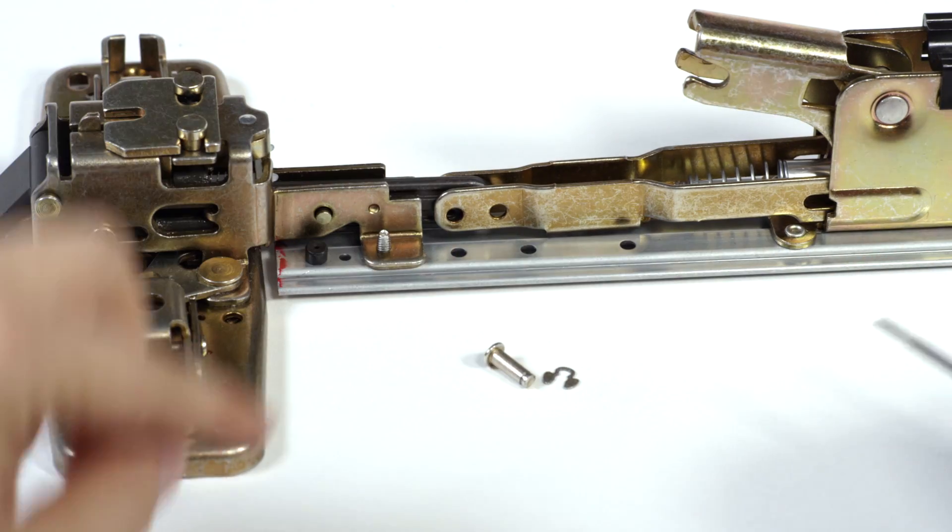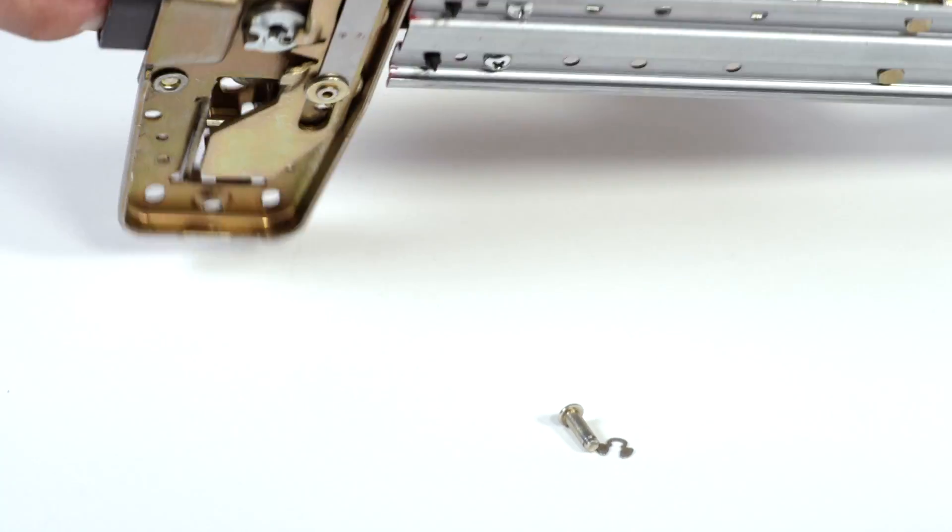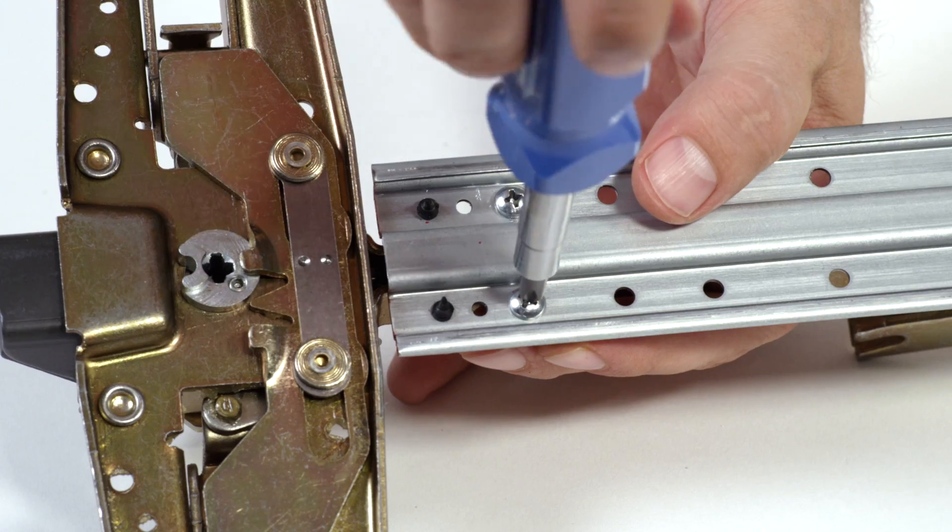The center case is connected to the base plate using two screws. Using a Phillips screwdriver, remove the two screws to separate the two.